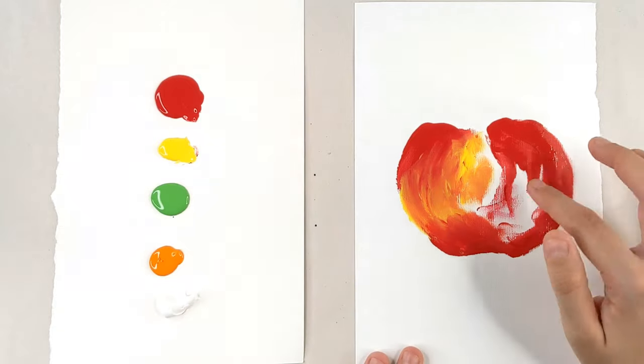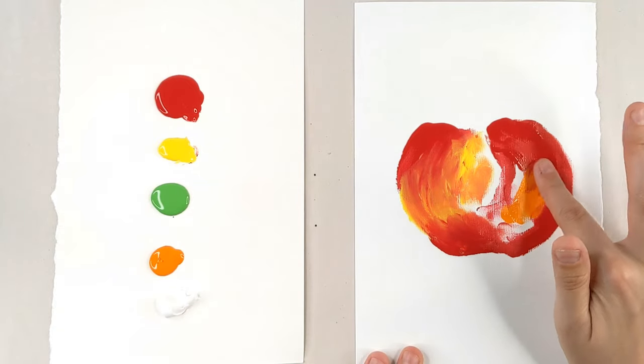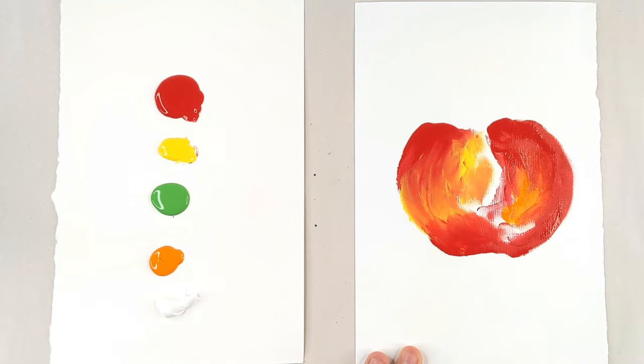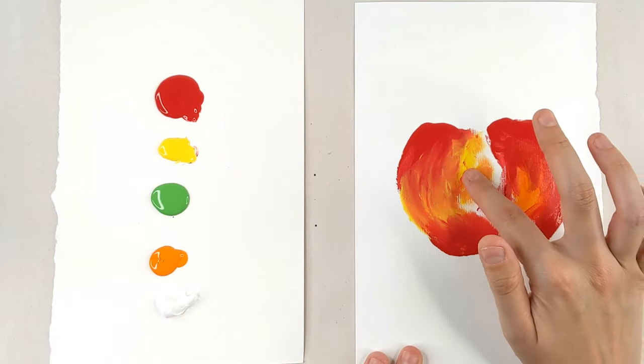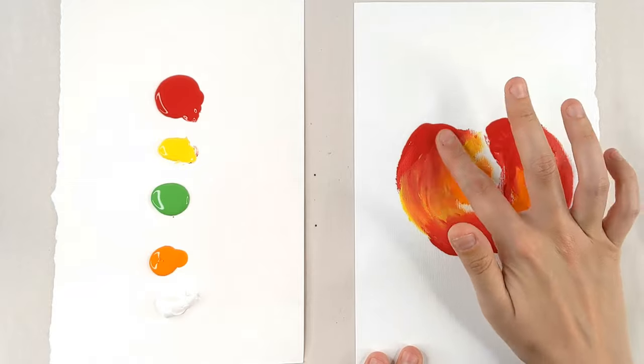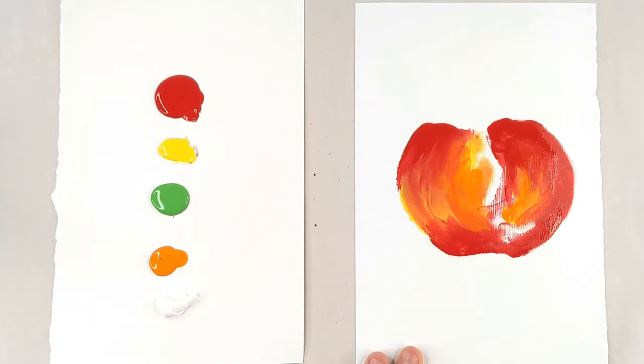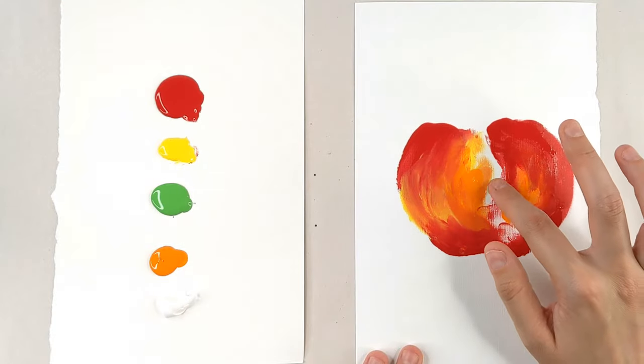I threw these different colors on so that we would have different options. You know, maybe some areas are a little bit more orange than just yellow. See, like that. Throw a little bit of orange there. And you can even throw a little bit of green in.